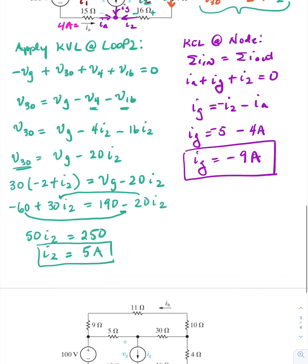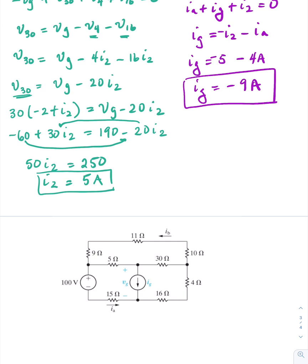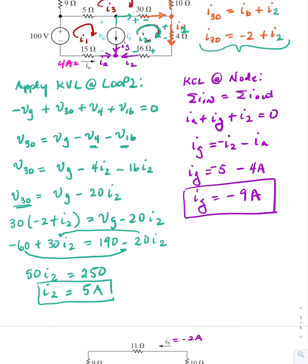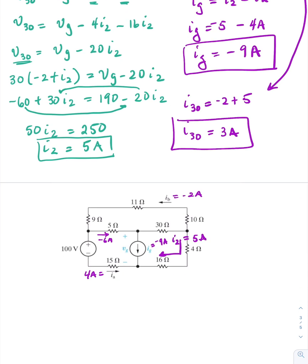So we know I sub 2 is 5 amps, I sub G is minus 9 amps, I sub A is 4 amps, and I sub B is minus 2 amps. The current going through that branch was minus 6 amps. I sub 30 equals minus 2 plus 5, so I sub 30 equals 3 amps.